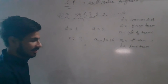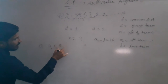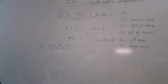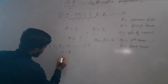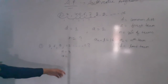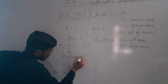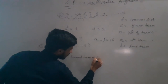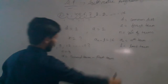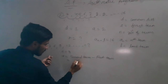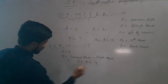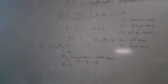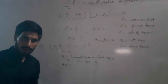A question is asked like this: given a progression, what is the first term? We can see the first term is 3. The second part of the question asks: what is the common difference D? D is always the second term minus the first term. Here the second term is 6 and the first term is 3, so the common difference D is 3.